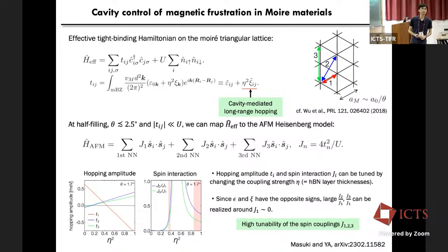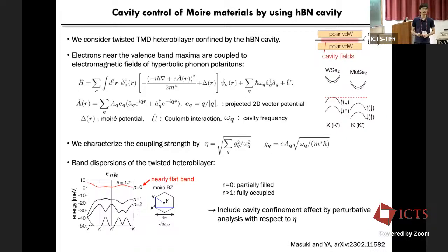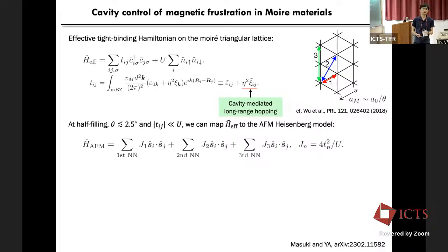In response to a question about truncating interactions up to third-neighbor: this depends on the choice of material. For our choice of materials, we have checked that higher-order terms like J_4, J_5, J_6 are smaller than J_3 by at least an order of magnitude, so it is sufficient to include up to J_3.